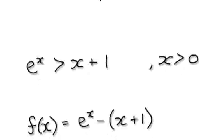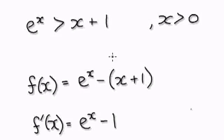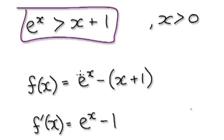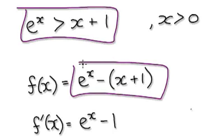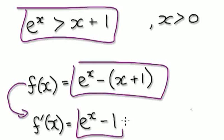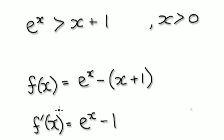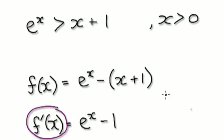Following on from the previous video, we wanted to prove this. We started out by defining our function to be this, and when we differentiate our function, it gave us this. Now, looking at this, we realized that f prime — the derivative — will always be greater than zero within our region.